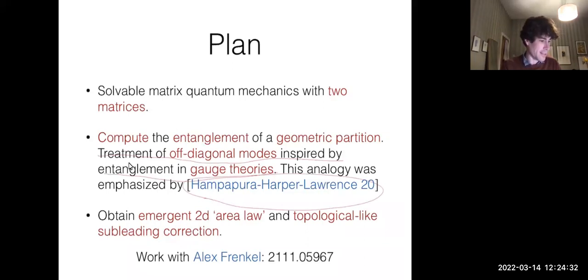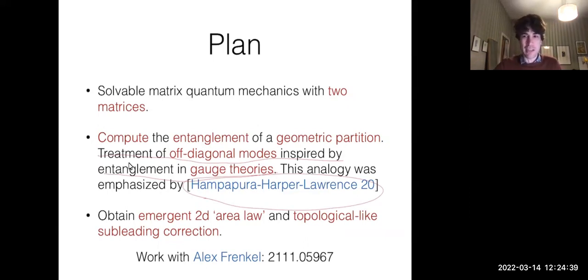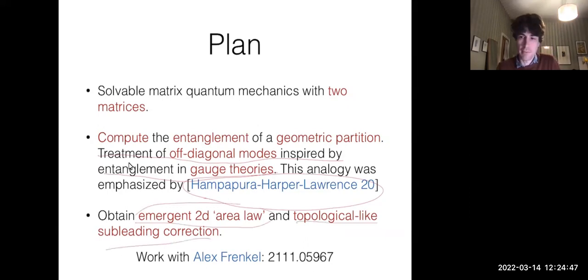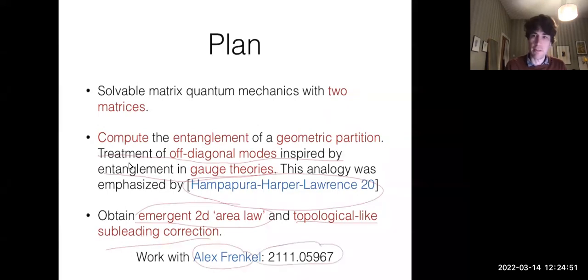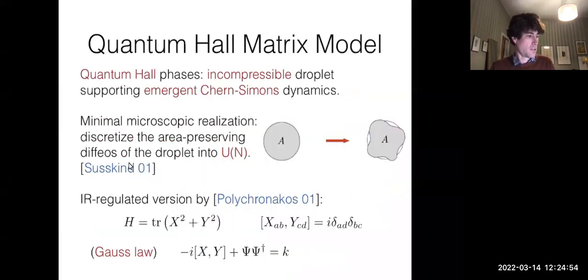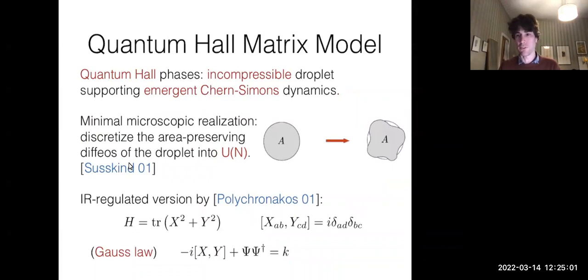The plan today is to introduce a solvable model with two matrices — the quantum Hall matrix model — and compute the entanglement of a geometric partition. The way we treat the off-diagonal modes is inspired by how people discuss entanglement in gauge theories, where objects like Wilson lines that go through the entanglement cut belong on both sides. That point was made by Albion Lawrence and collaborators. What we're adding is an actual calculation in actual states, getting a 2D area law and topological sub-leading corrections.